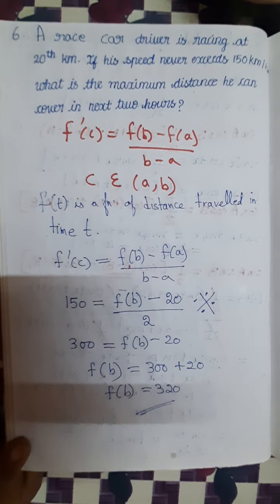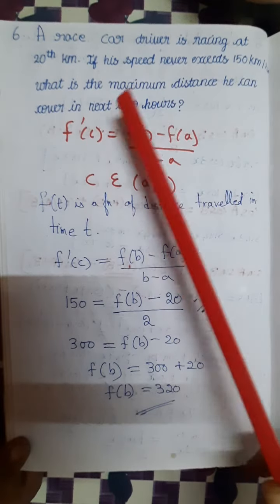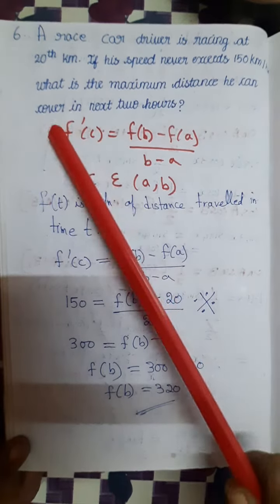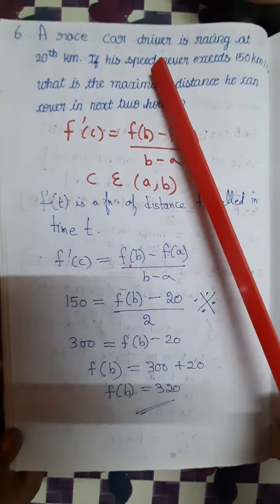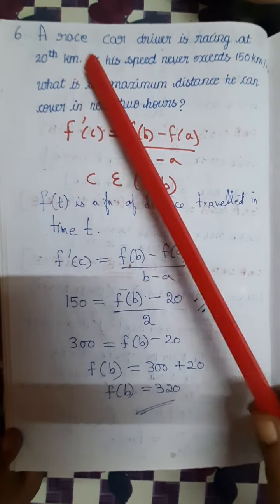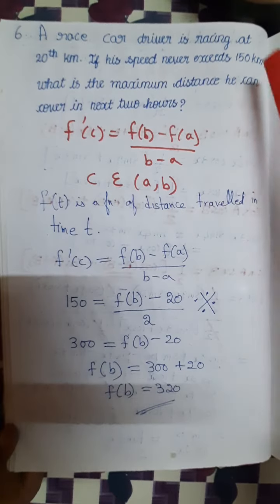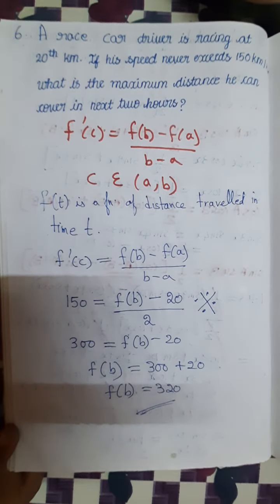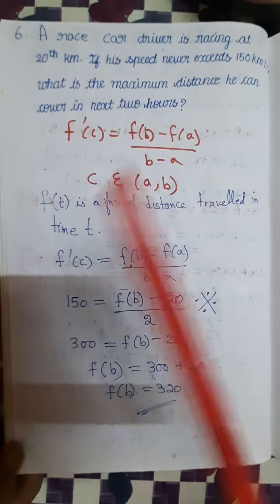A race car driver is racing at 20 km. If his speed never exceeds 150 km per hour, what is the maximum distance he can cover in the next 2 hours? The race car driver is at the 20th km mark, racing at 150 km per hour.